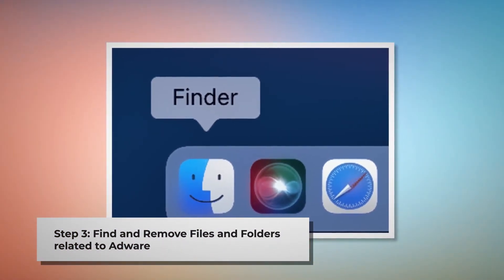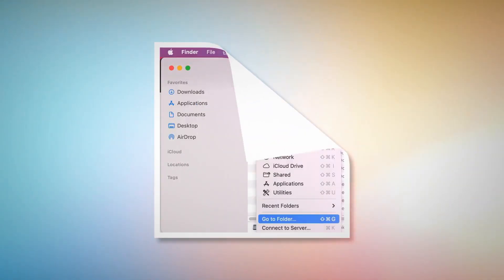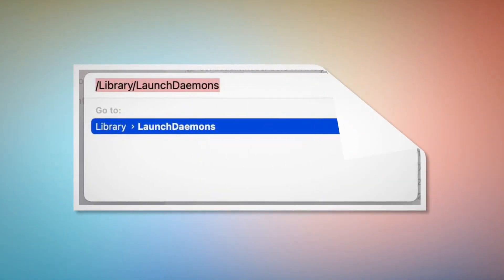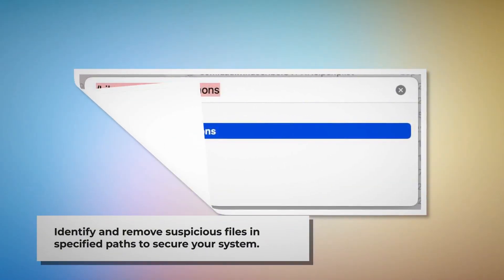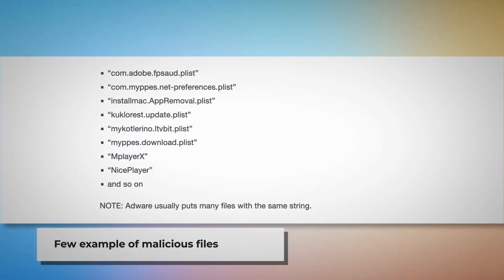Step three: find and remove files and folders related to adware. Make sure you are in the Finder folder. Once you are in the Finder folder, click on Go at the top menu bar and then Go to Folder from the drop-down menu. A pop-up window will appear where you should type these file paths and press Enter — such as /Library/LaunchDaemons, /Library/LaunchAgents, /Library/Application Support, and so on. Look for suspicious or malicious files and move them to Trash. Note: adware usually puts many files with the same string.